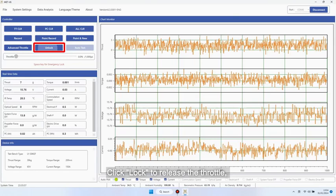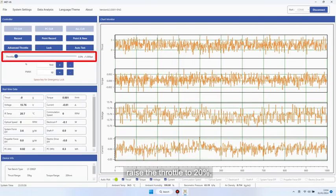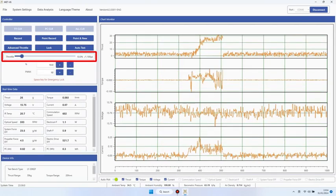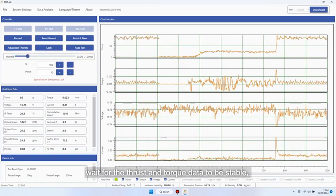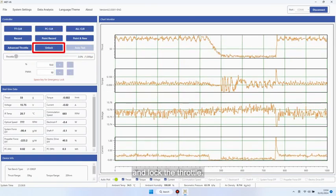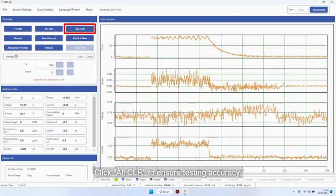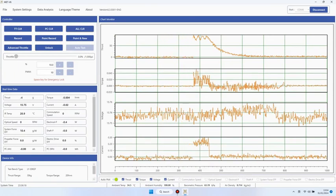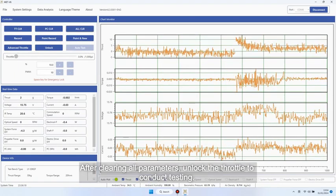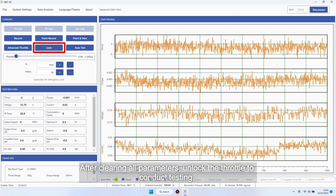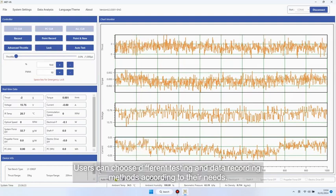Click Lock to release the throttle. Raise the throttle to 20%, wait for the thrust and torque data to be stable, and lock the throttle. Click All CLR to ensure testing accuracy. After clearing all parameters, unlock the throttle to conduct testing. Users can choose different testing and data recording methods according to their needs.